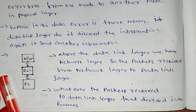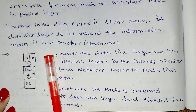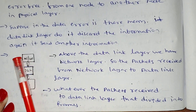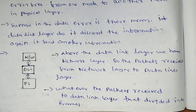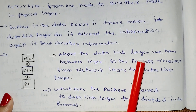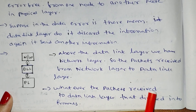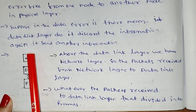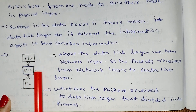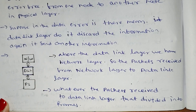Suppose there is an error in the data — the data link layer will discard and resend it. Packets received from the network layer are divided into frames in the data link layer. So the packets are pumped into the data link layer, divided into frames and split.